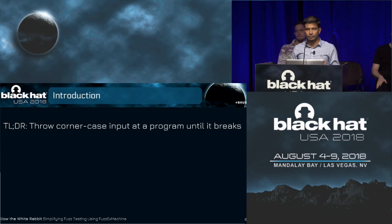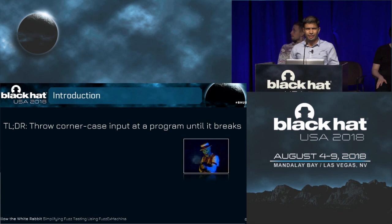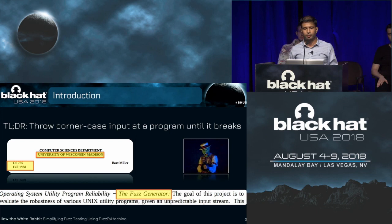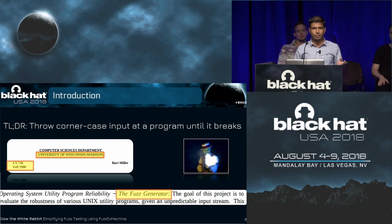I'm sure most of you are aware of what fuzz testing is, but for those who don't, it's essentially throwing corner case input at a program until it breaks — it's a bit like shooting in the dark, but not exactly. The idea is not new. In fact, anecdotally speaking, it dates back to a computer science assignment in 1988 provided by Professor Bart Miller at the University of Wisconsin, when he asked students to write the so-called Fuzz Generator program. The goal was to provide an unpredictable input stream to test the resilience of Unix utility programs. Although this approach was rather dumb, it was surprisingly effective — one-third of the Unix utility programs tested crashed.